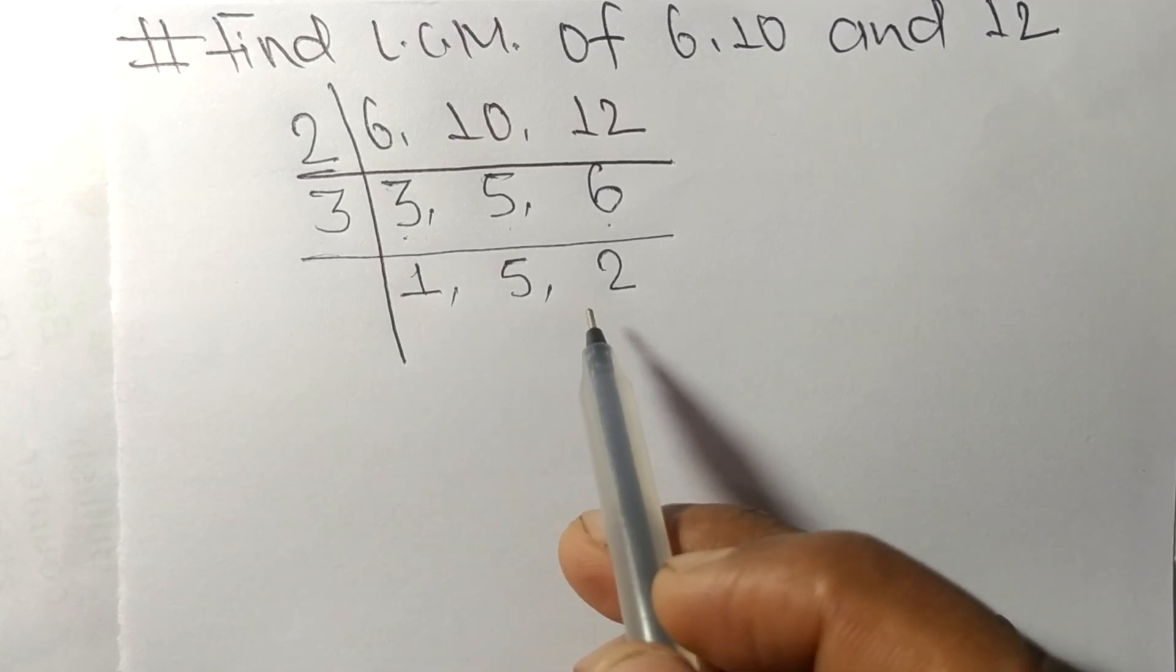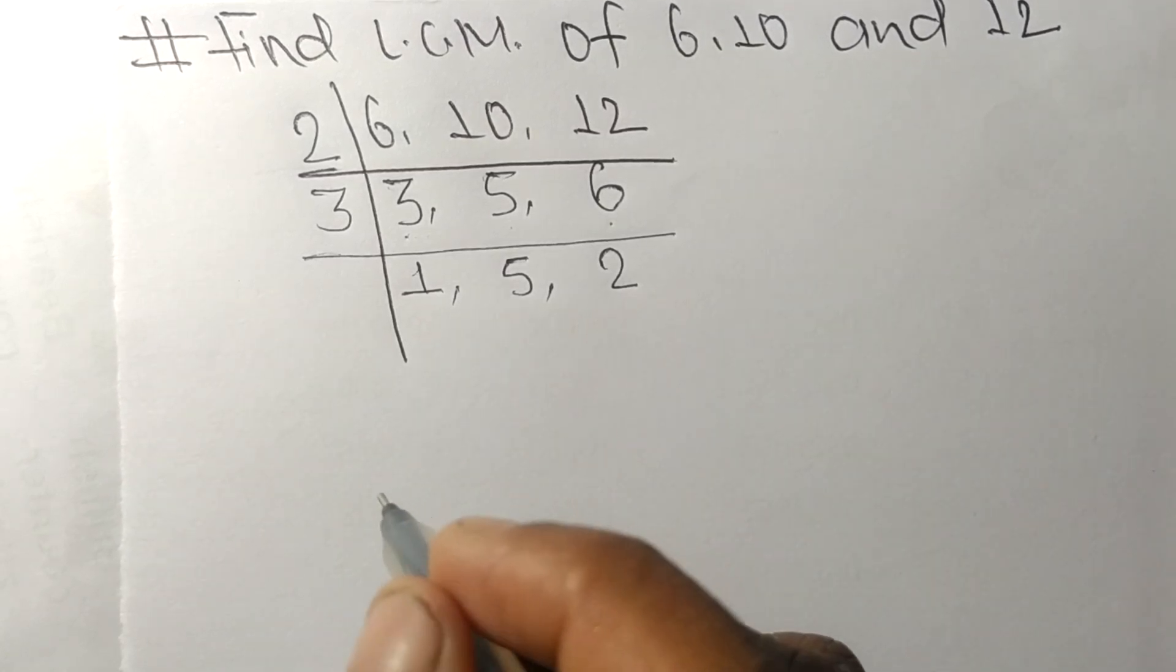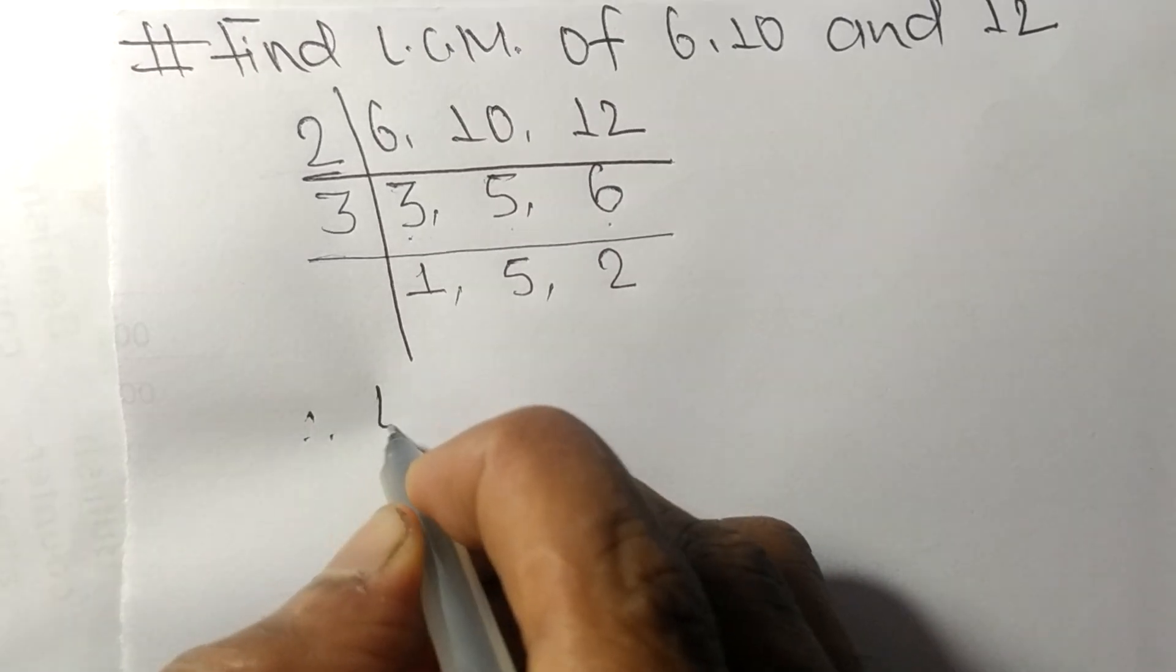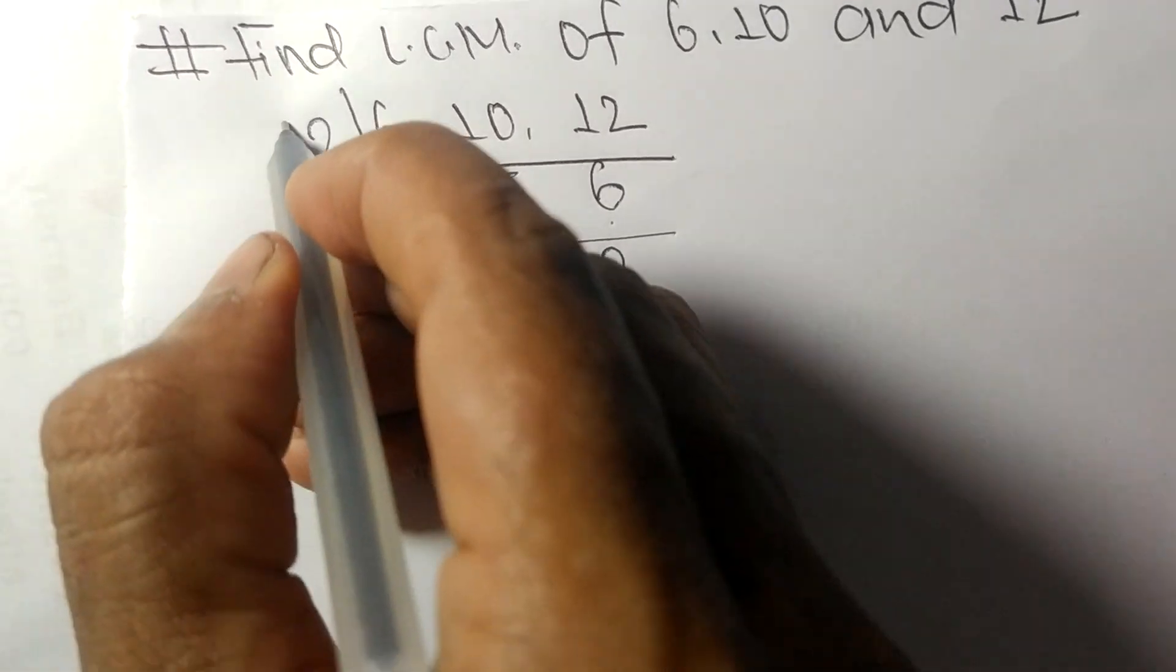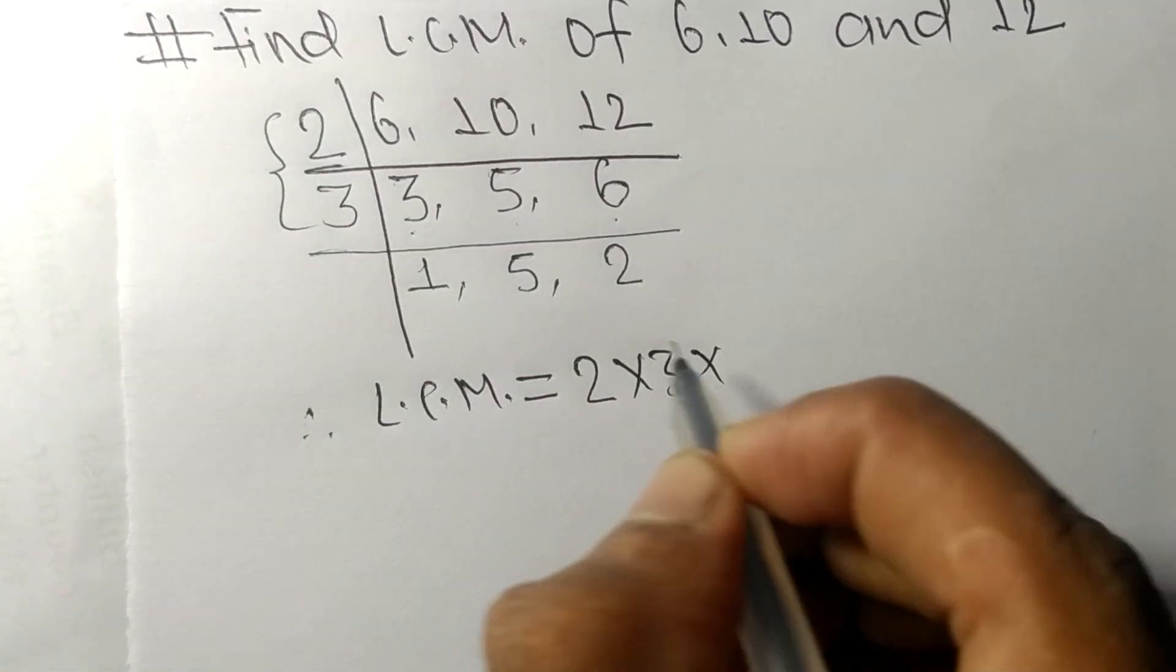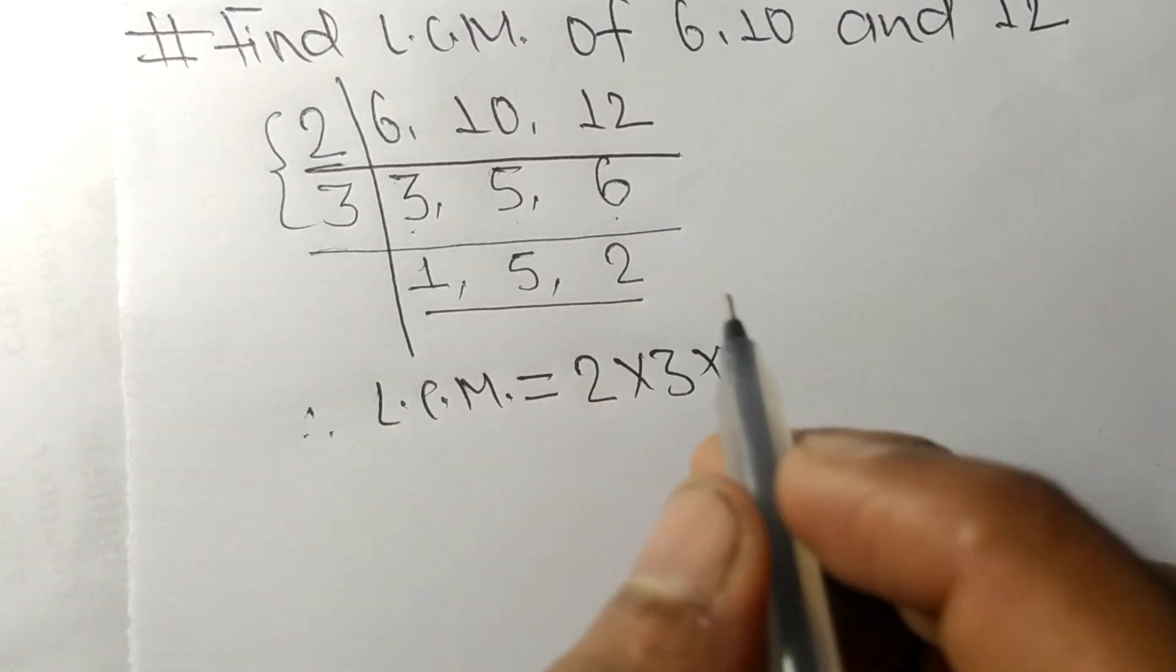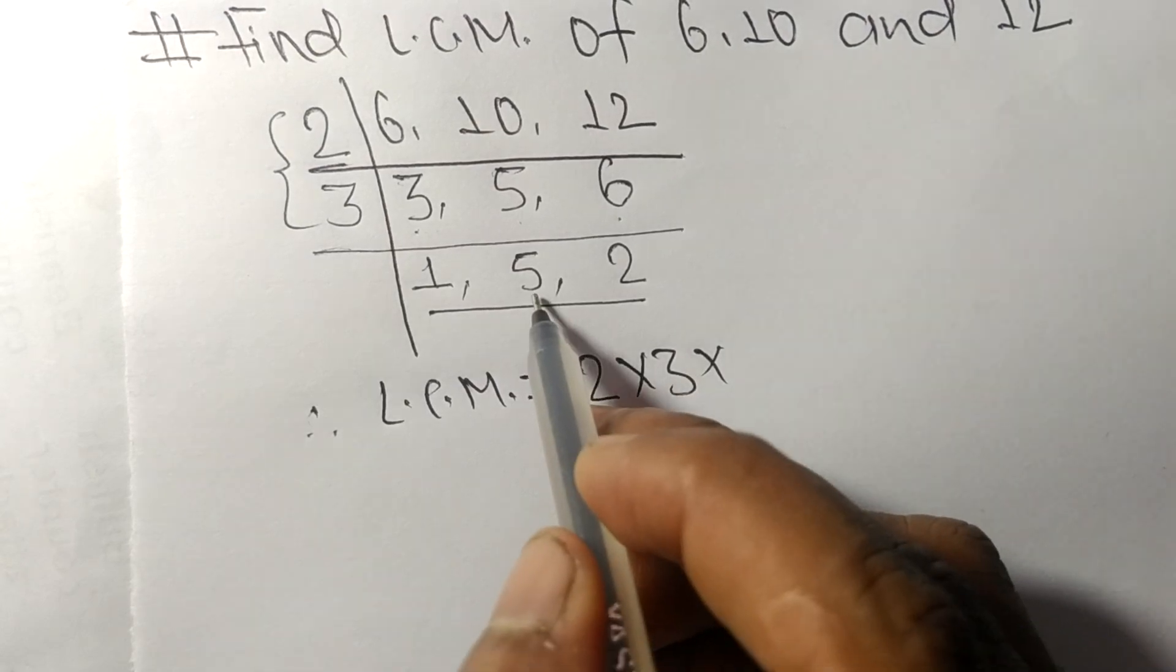Therefore, the LCM is equal to: from this side we take 2 and 3, and from this side we choose the numbers greater than 1, which are 5 and 2.